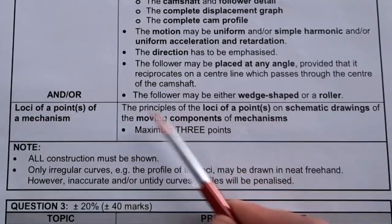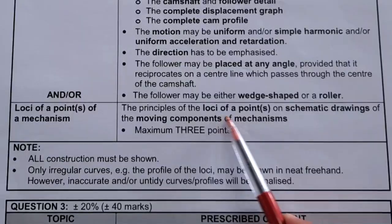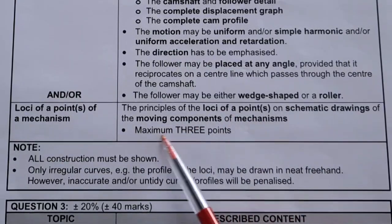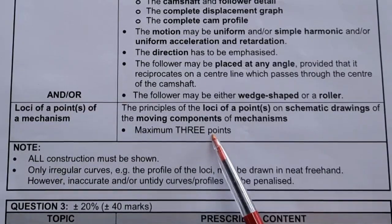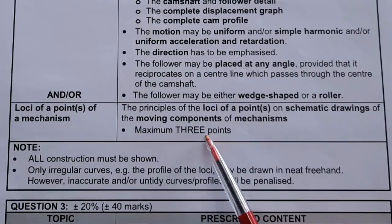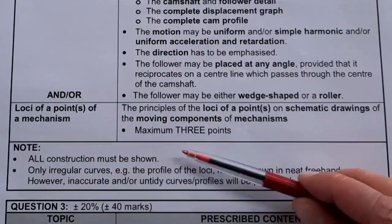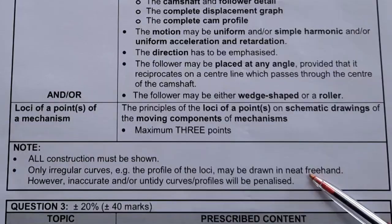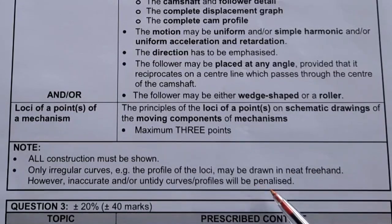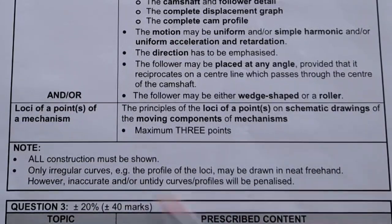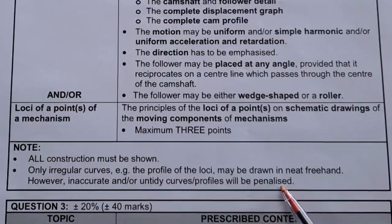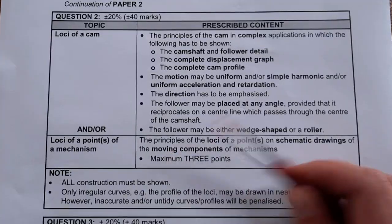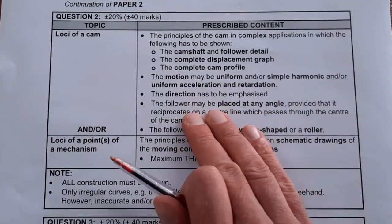If they ask for loci of a mechanism, the principles of a loci of a point on schematic drawing of the moving components of a mechanism will be asked, maximum three points at a time. That can be very complex. Make sure in these drawings you show all your construction and that your curves are neatly drawn. If you do not have a French curve, you can do it freehand. Please don't be penalized here if it is inaccurate or untidy. You can be penalized.